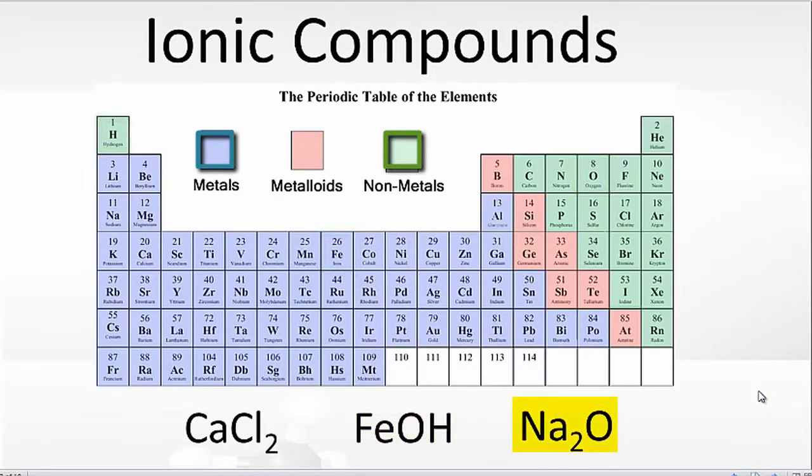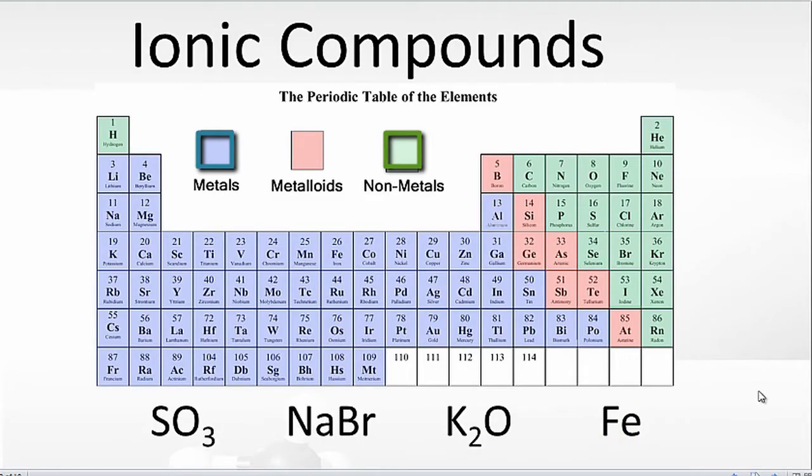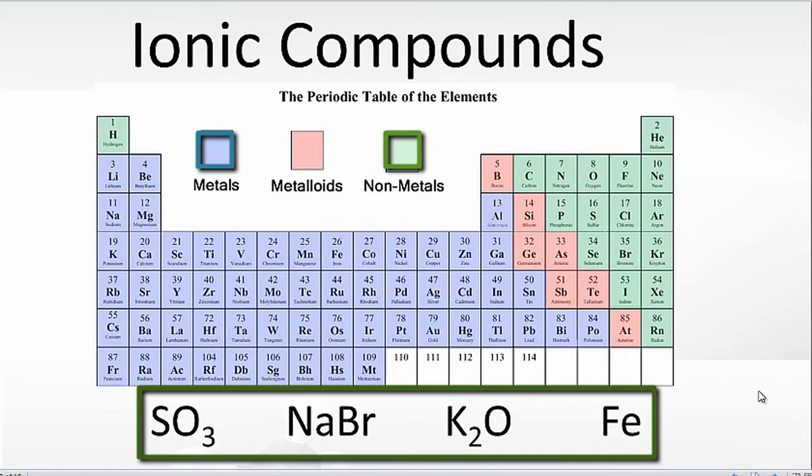Finally, for Na2O, we have Na, which is a metal, oxygen, that's a non-metal, and we have an ionic compound. So press pause and look at the items below and determine which ones are ionic compounds.